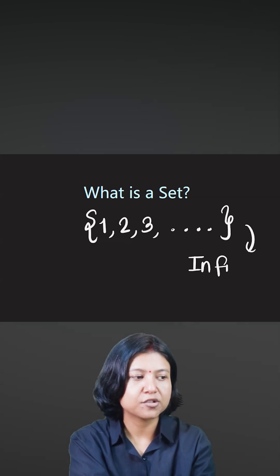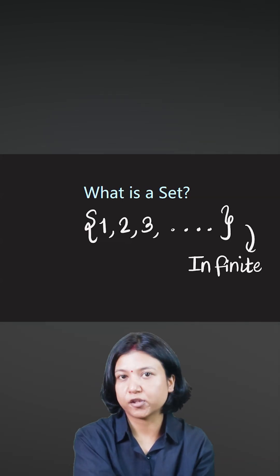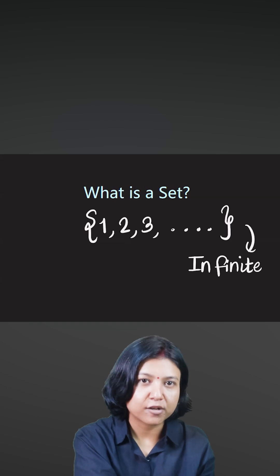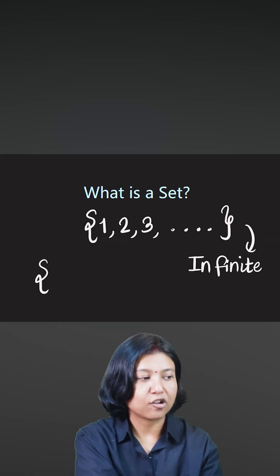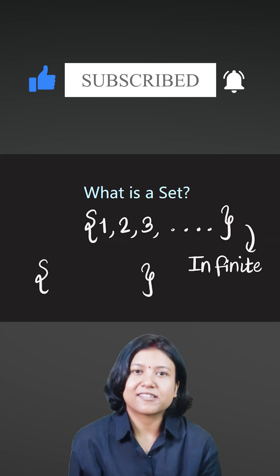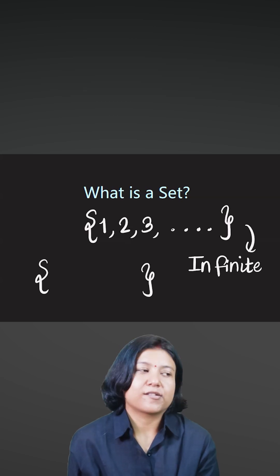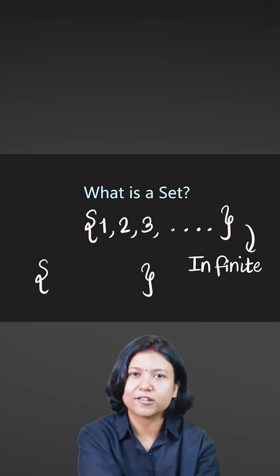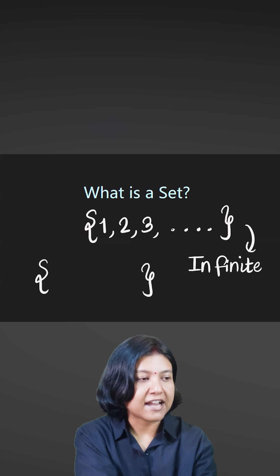Whereas if I ask you to list all the countries of the world, then you have a finite number of countries. Well, in that case, that is also a set because I'm trying to categorize things - I have categorized things based on some characteristics. So if I'm listing out all the names of the countries, then that happens to be our finite set.